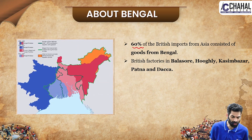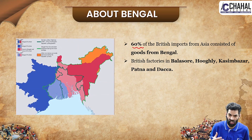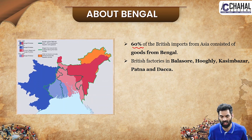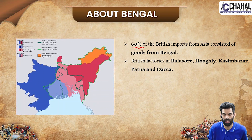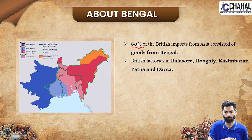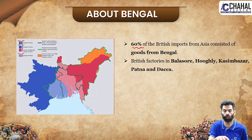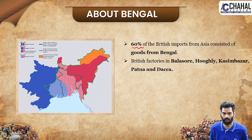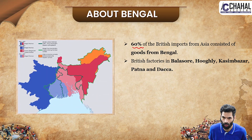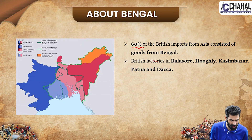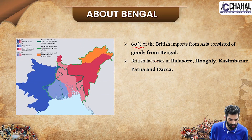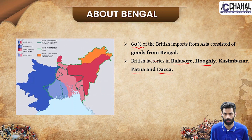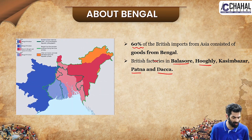60% of British imports consisted of goods from Bengal. This is why all European companies wanted to control Bengal. The British East India Company set up factories at Balasore, Hugli, Kasimbazar, Patna, and Dhaka, establishing a strong commercial presence in the region.